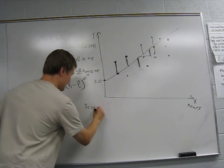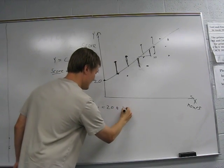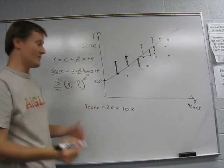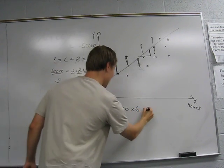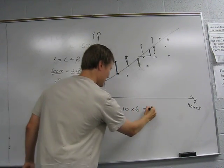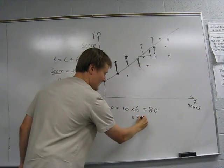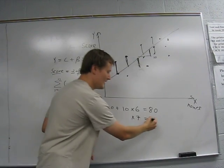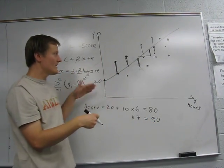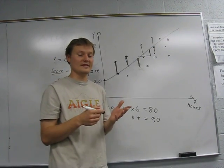So something like this. So the score of a student who studied for six hours would be an 80. The score of someone who studied for seven hours would be 90. So an extra hour of study would translate into plus 10 points on the exam.